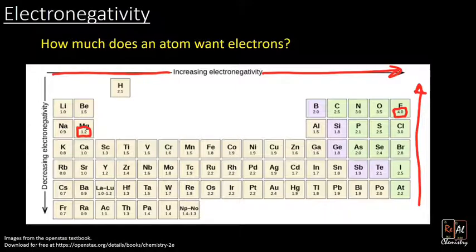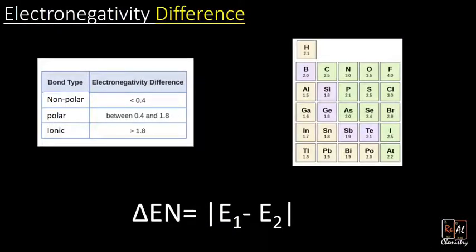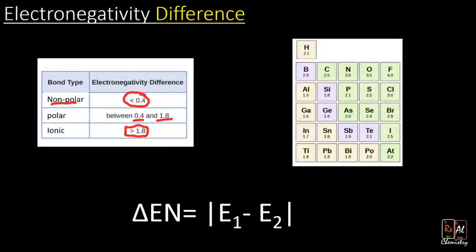A polar bond is something that's sharing electrons unequally, and that depends on the difference in electronegativity, not the absolute value. If we take the difference between two values and get between 0 and 0.4, we're dealing with something nonpolar — they're sharing electrons pretty equally. A difference between about 0.4 and 1.8 means it's polar — one atom is pulling more electrons toward itself. If we get a really big difference, greater than 1.8, that makes it ionic — the electron has been fully transferred, not shared.